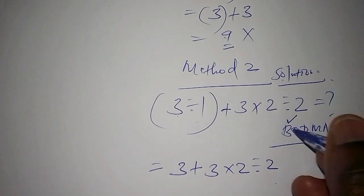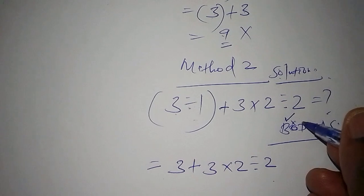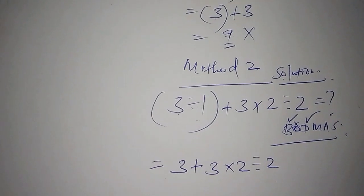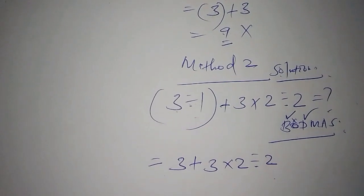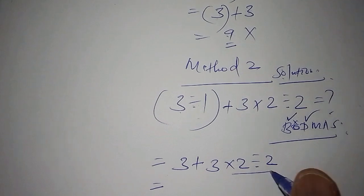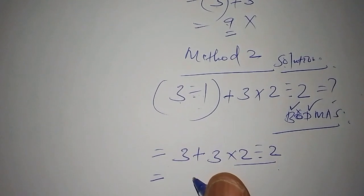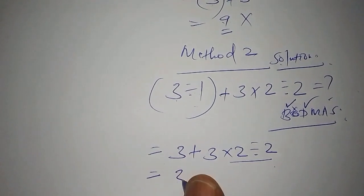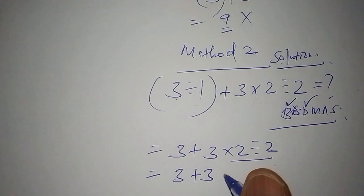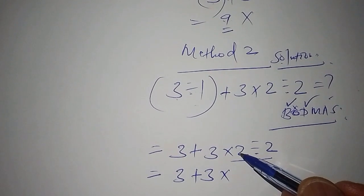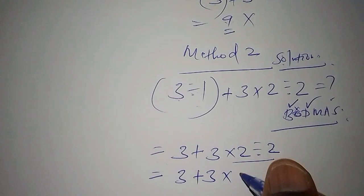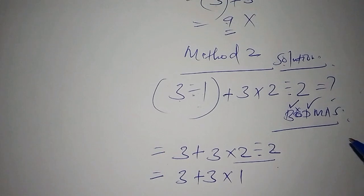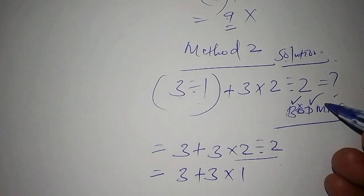The next one we have to work out now, so we have 3 add to 3×2÷2 is 1. So the next method we have is multiplication.